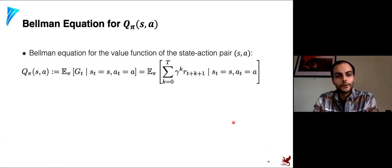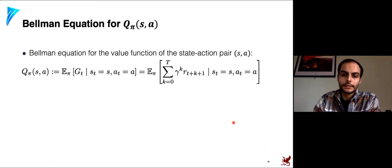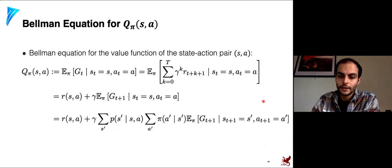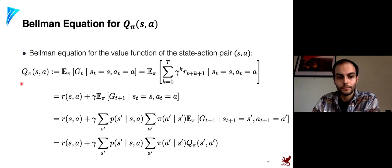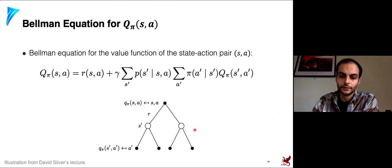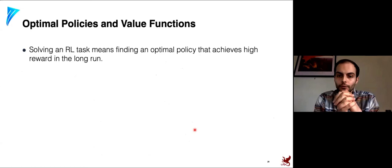Similarly, the Bellman equation for Q^π(s, a) expands one step ahead: from a state-action pair we transition to the next state, then follow the policy to select the next action, giving a recursive relationship between Q at the current state-action pair and Q at the next state-action pair.